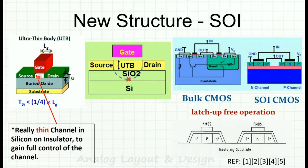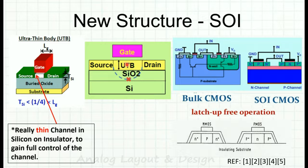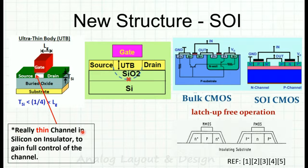The new structure uses a very thin channel with the gate brought very close to it, and a buried oxide (BOX) layer placed just below the source and drain, above the substrate. The BOX layer is silicon dioxide and cuts off the leakage path between drain and source. The channel is in thin silicon with the insulator providing full control — this structure is called SOI, silicon on insulator.